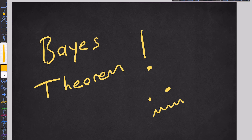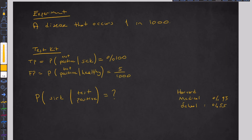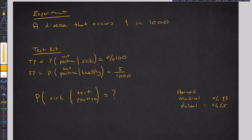What is Bayes' theorem? So first of all, let's make an experiment with you. Think about a disease — a disease that occurs in only one person in a thousand people in society. And we developed a test kit for that disease because we love people, we love to work, so we worked a lot and we created a test kit.